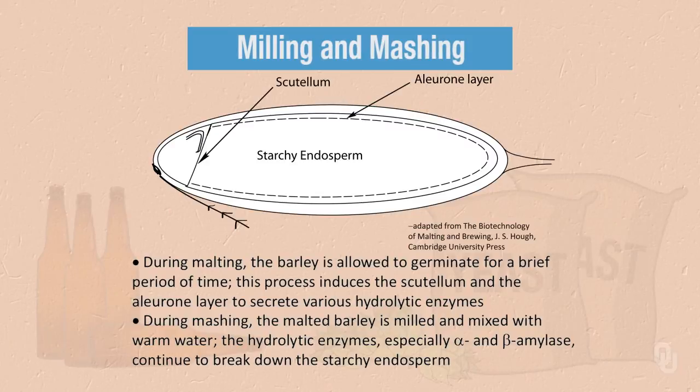This figure shows a barley seed. Notice that the starchy endosperm takes up most of the seed. During malting, the barley is allowed to germinate for a brief period of time, and this process induces the scutellum and the aleurone layer to secrete various hydrolytic enzymes. During mashing, the malted barley is milled and mixed with warm water, and the hydrolytic enzymes, especially alpha and beta amylase, continue to break down the starchy endosperm.